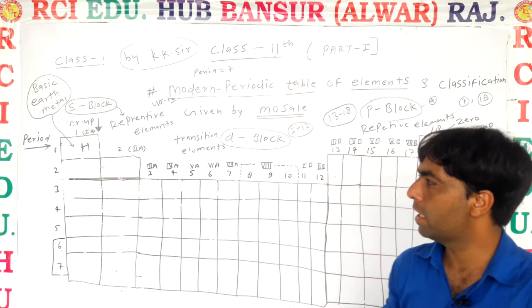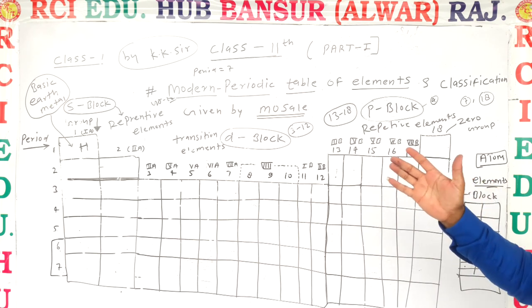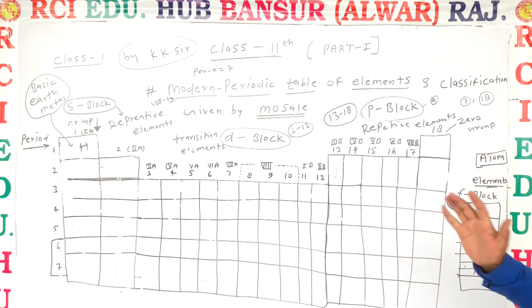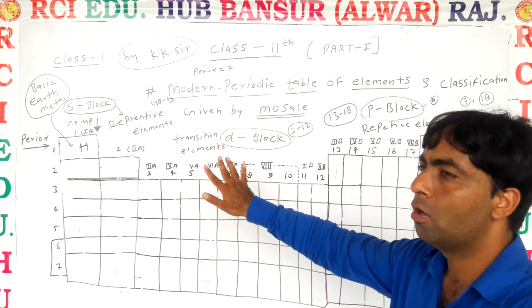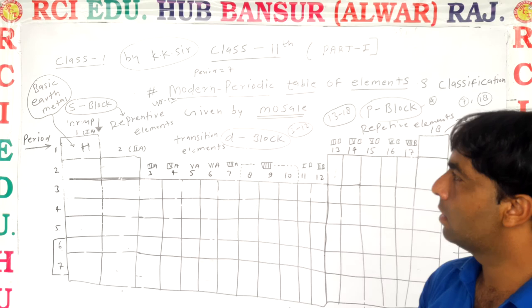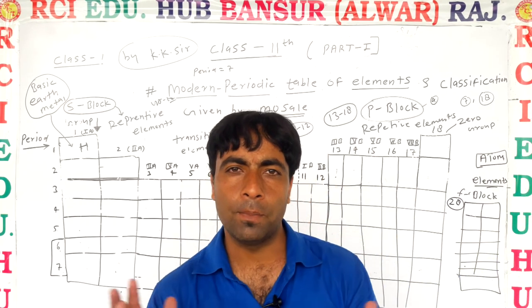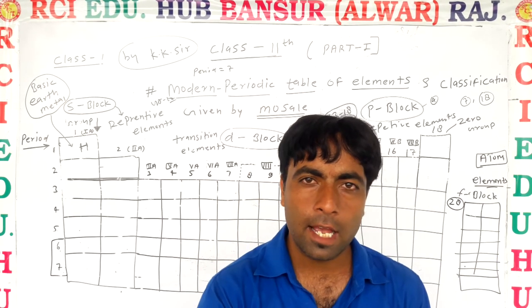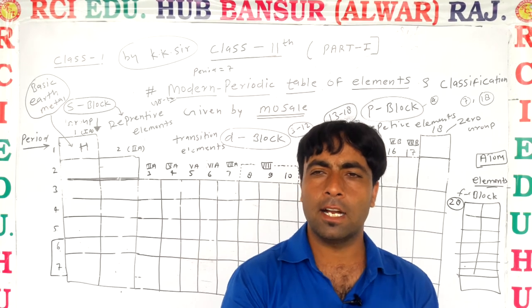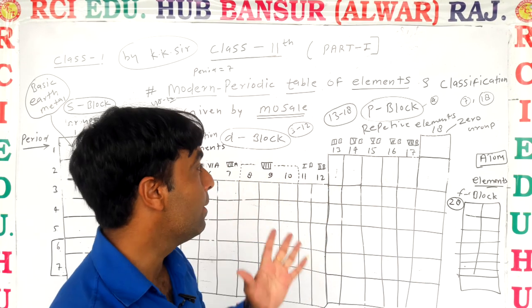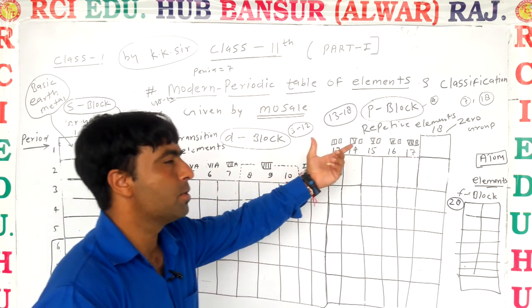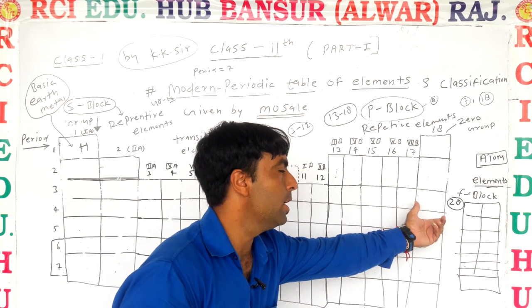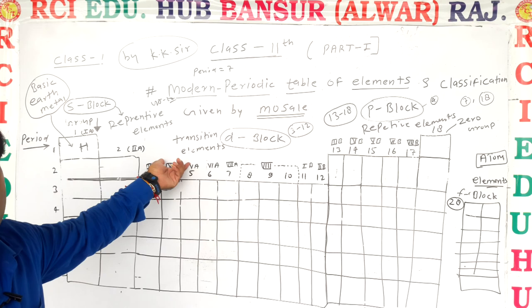Today we learned how we make the periodic table and their classification generally. In summary, we can say there will be 4 blocks in the modern periodic table — that is S-block, P-block, D-block, and F-block elements. Their other names are also represented: representative elements and transition elements.